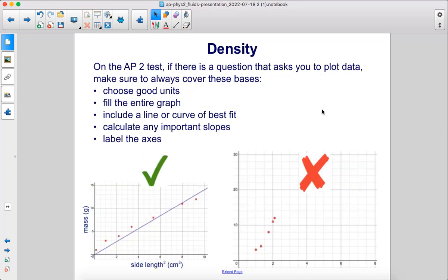On the AP2 test, if there's a question that asks you to plot data, make sure to always cover these bases: choose good units, fill the entire graph, include a line or curve of best fit, calculate any important slopes, and label the axes. So you can see all those things here. This would not be as good. So make sure you always label your axes with units. Fill up the whole graph.